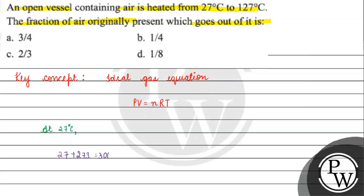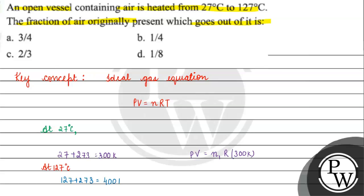At 300 Kelvin — we convert 27 degrees Celsius to Kelvin, which gives 300 Kelvin. We also convert 127 degrees Celsius: 127 plus 273 gives 400 Kelvin. So our two temperatures are 300 Kelvin and 400 Kelvin.